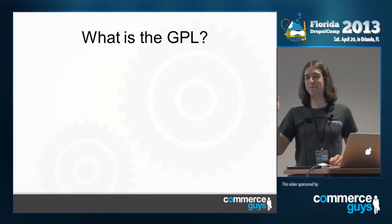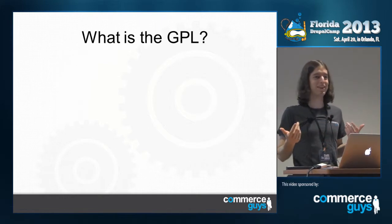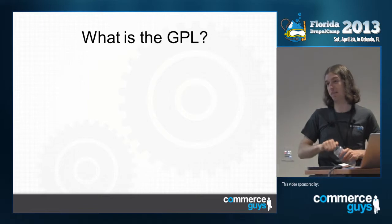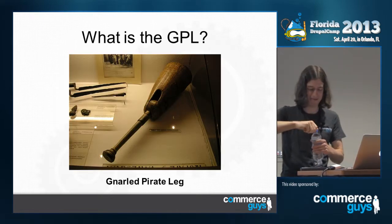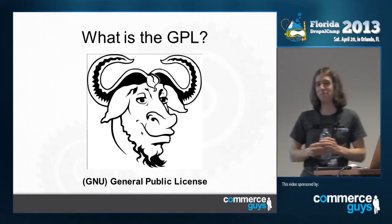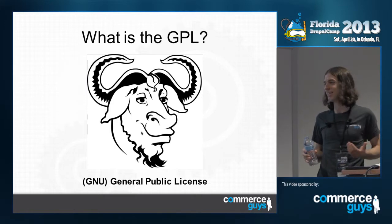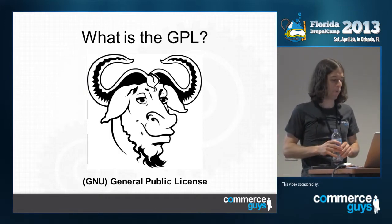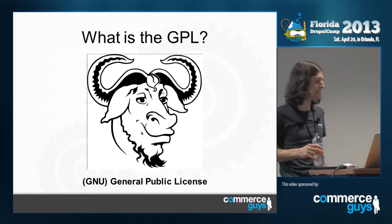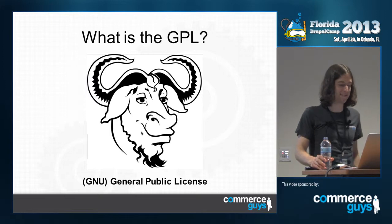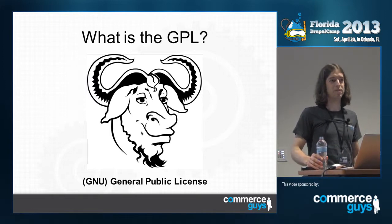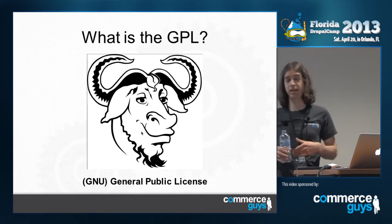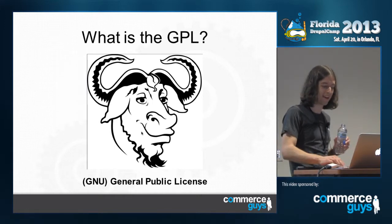Excellent — I'm glad that some of you don't know it. Of those who raised their hands, what does it stand for? 'Great peanut lotion?' General public license? That's the right answer. It is the General Public License. Actually, until last month, I thought the G stood for 'new' — I had no clue it stood for General Public License. But it is the new General Public License. This is the license that governs the distribution of Drupal — the code that you're all learning to use, developing on the back of your own money or your client's money, and then releasing for free.